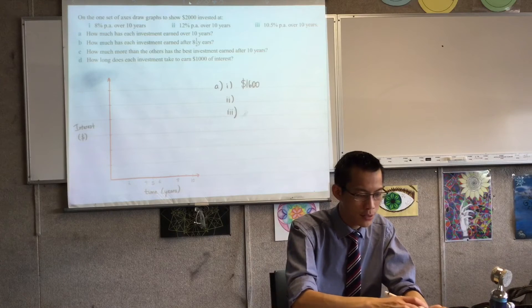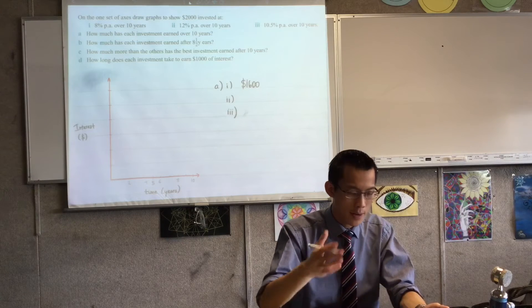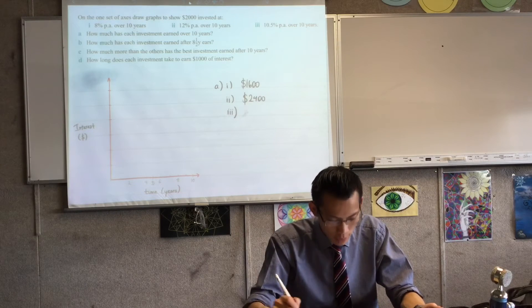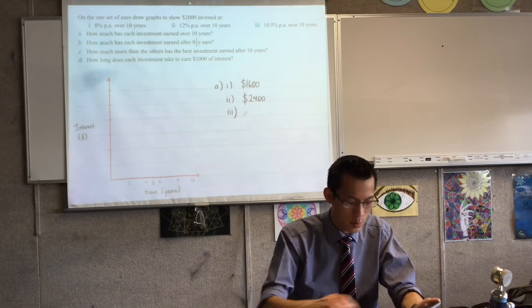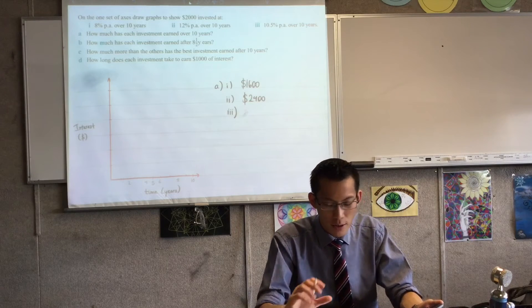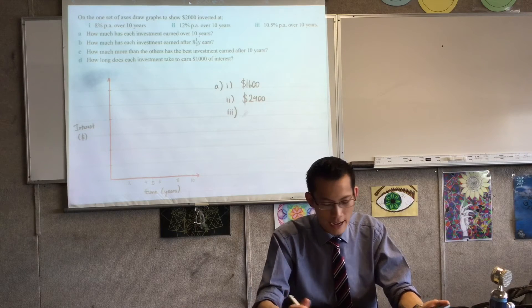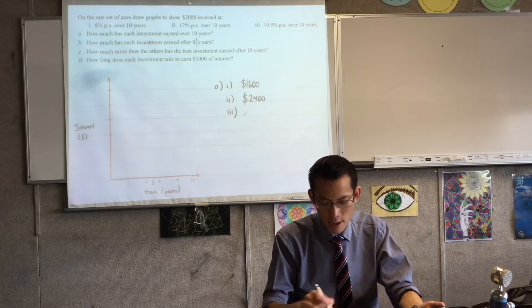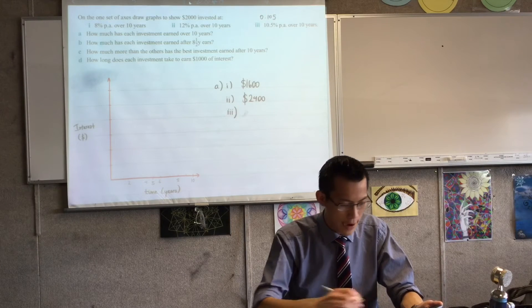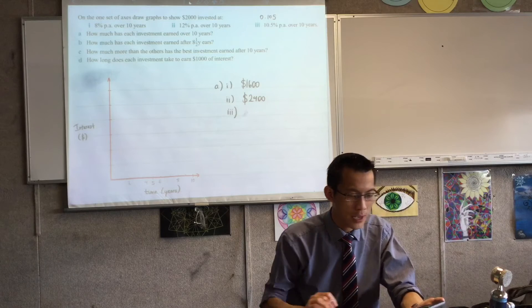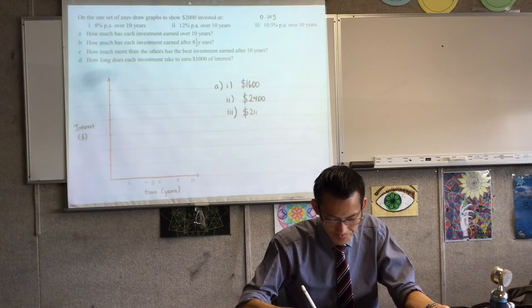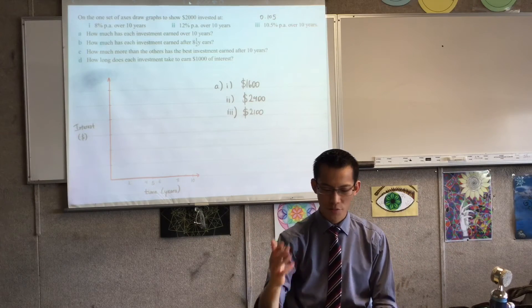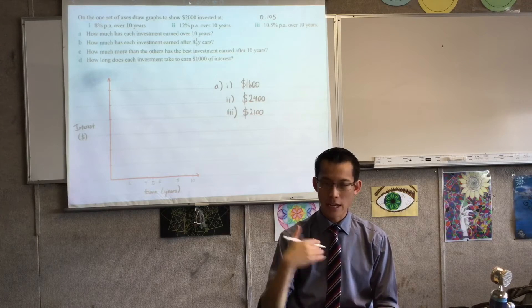12%, if you substitute now, you got to be careful, right? Because when you do 12 divided by 100, it's going to give you 0.12. So that gives me $2,400. And then when I have a look at the last one, 10.5%, because it's got a 0.5, the number you're going to punch in as your decimal interest rate will be 0.105, so you get another decimal point there. Again, when you punch that in, you get a figure. So this is the whole amount of money after 10 years, the end point for each of my three lines for each of my three different investments.